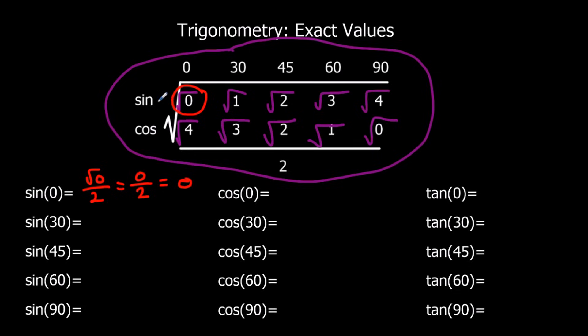Sin 30, where sin meets 30, is root 1 over 2. Root 1 can be simplified. What times itself makes 1? Well, 1. So that's 1 half.